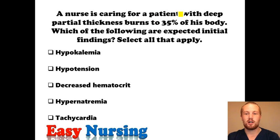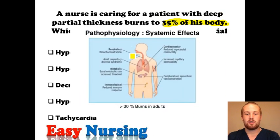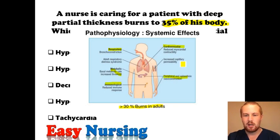You're caring for a patient with deep partial thickness burns to 35% of the body. When we're talking about 30% or greater, this is a severe burn, and severe burns have systemic effects. Which of the following are expected initial findings? With greater than 30% burns, you can expect cardiovascular problems, respiratory issues, metabolic effects, immunological risks such as infection, vasoconstriction, spasms, and increased capillary permeability.